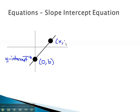The other point, let's just call x, y. I want to start by calculating the slope between these two points. Let's call the 0b, or the y-intercept, the first point, and the xy, the second point.